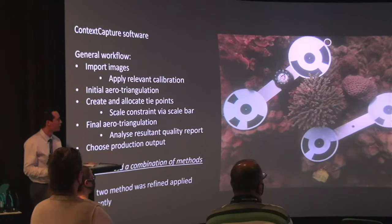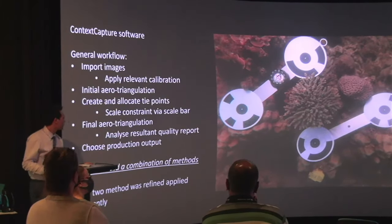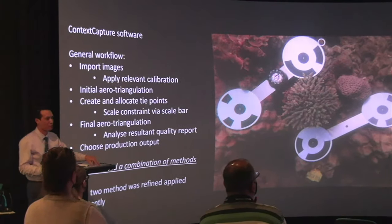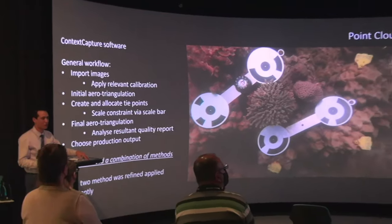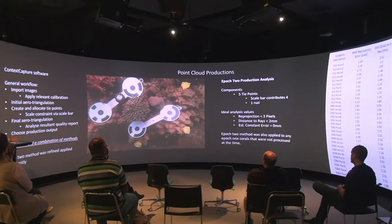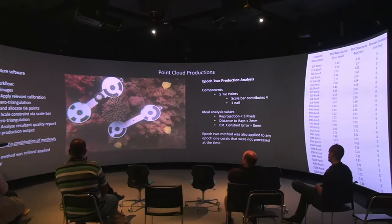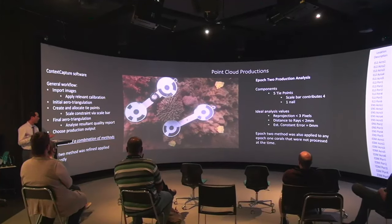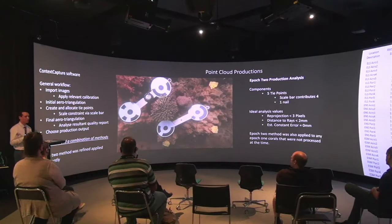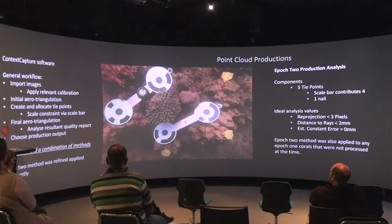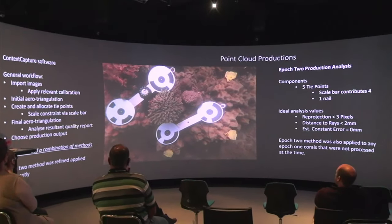Our main productions were point clouds — we could also do meshes and ortho DSMs. The general workflow is very similar to what we used in our calibration, still in Context Capture. We import our photos, importantly applying the calibration used for that particular production, and fix those parameters so the software knows exactly how to adjust. Then instead of a coordinate system for control points, we use simple tie points — I'm just telling Context Capture where the point is in so many photos and then it puts it together. You'll see here the cattle tags, nail points, and a couple of scale bars.